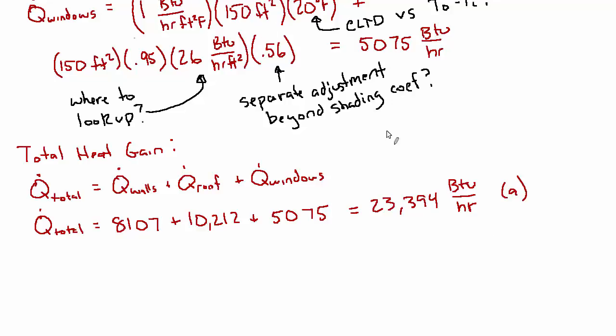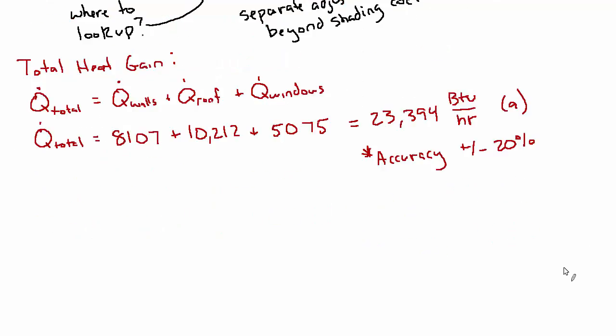And I really want to stress for this problem the accuracy here. There's got to be plus or minus 15 or 20% at best. There's so many assumptions. There's the lookup tables. There's the latitude. There's the properties of these materials. We're making assumptions for a lot of the materials. So from a design perspective, it's pretty important to be conservative here. So that you don't end up being unable to cool the space.